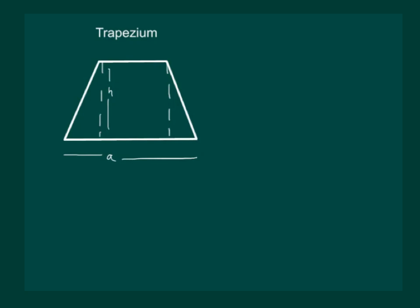From the figure we can see that we can divide this trapezium into one rectangle — depending on the trapezium — and two triangles. Let us give names to each vertex: a, b, c, d, e and f.